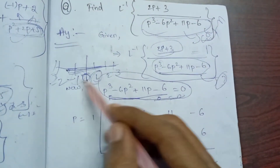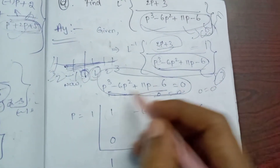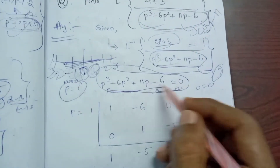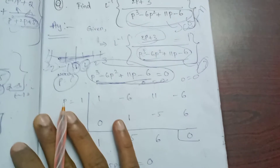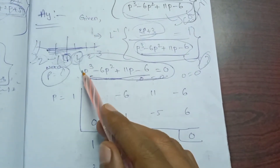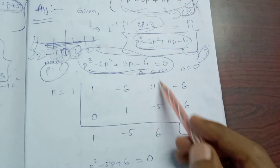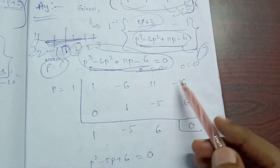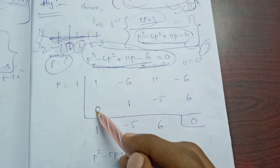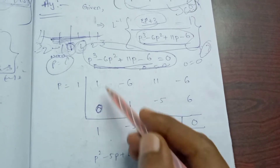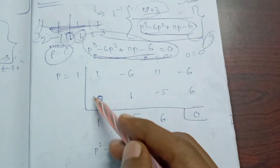Here p is equal to 1, so p equals 1 is our value for synthetic division. We have the p³ coefficient is 1, p² coefficient is minus 6, p coefficient is 11, and the constant is minus 6.